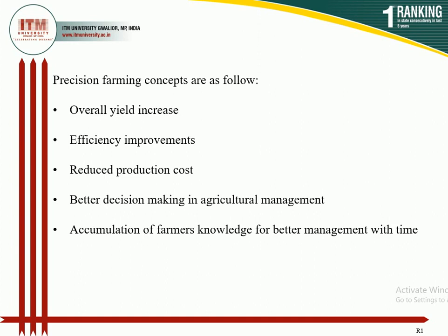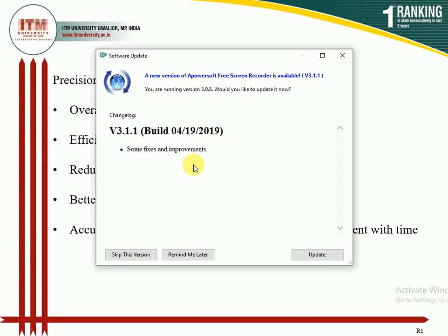Gathering information about growth stages of crop, pest population, pathogen attack, and soil features helps decide when to apply insecticide, when to irrigate, and when to sow a crop. The fifth concept is the accumulation of farmer knowledge for better management over time. All precision farming field activity produces valuable field and management information. The data are stored in tools and computers, allowing farmers to accumulate knowledge about their farm production system for better management.